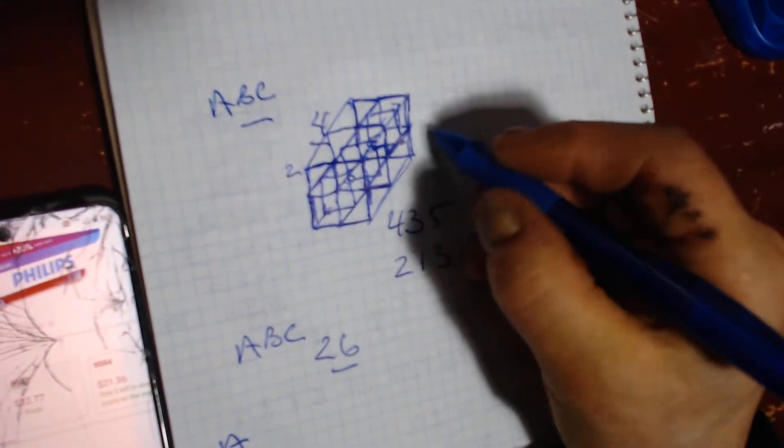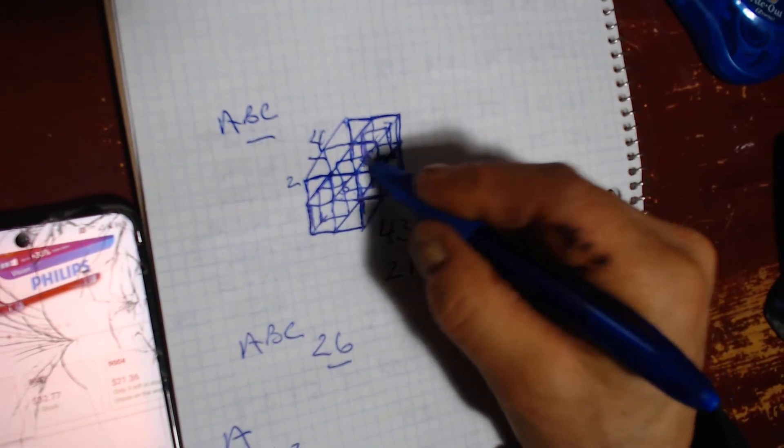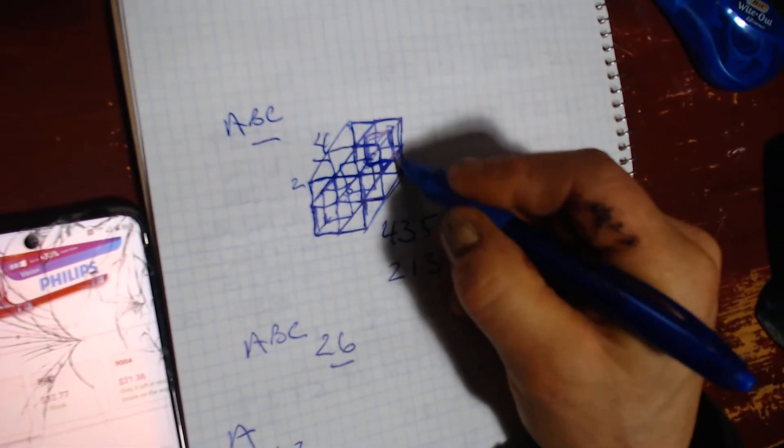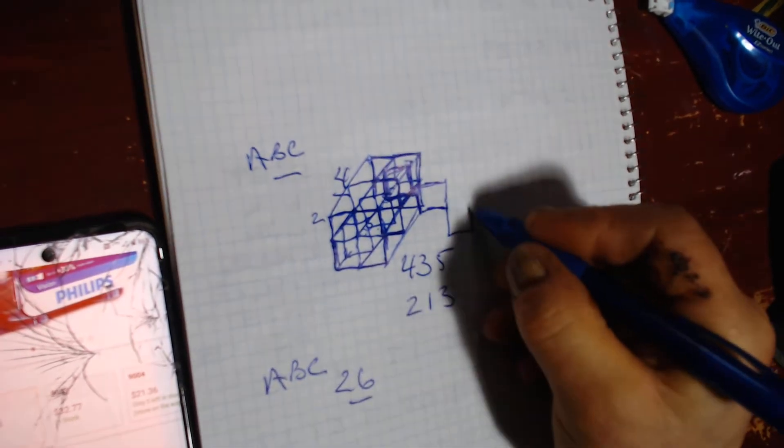Now on this side, okay, there's going to be, here's your square, and here's your next square. And then here's your next square.